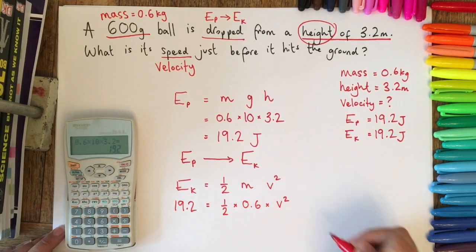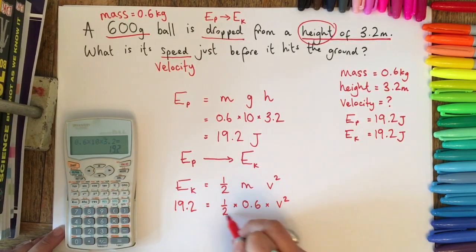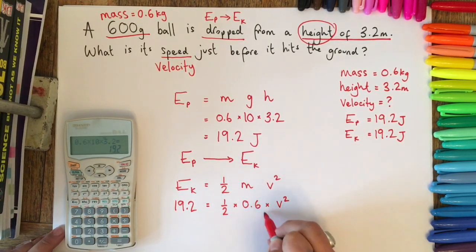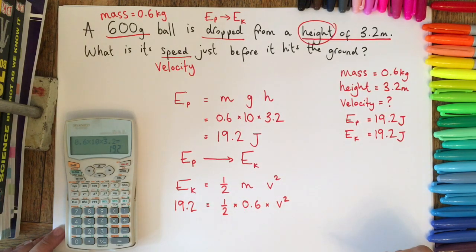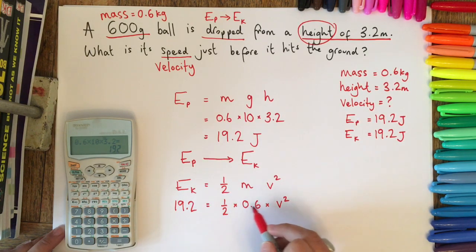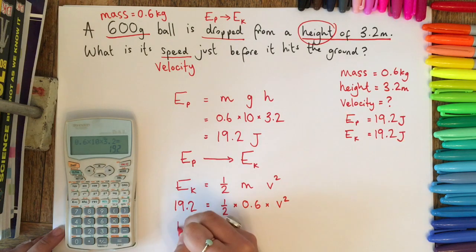I'm actually going to try and bunch these two up, so we're going to consider half times 0.6 a bit of a block. We want to get v squared by itself, so what we're going to do is we're going to divide both sides by a half times 0.6. So we'll end up with 19.2 over a half times 0.6.